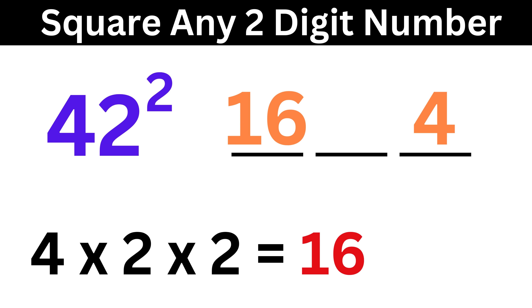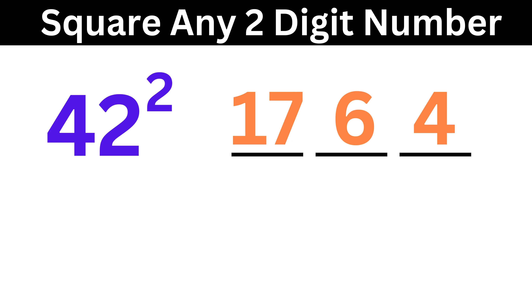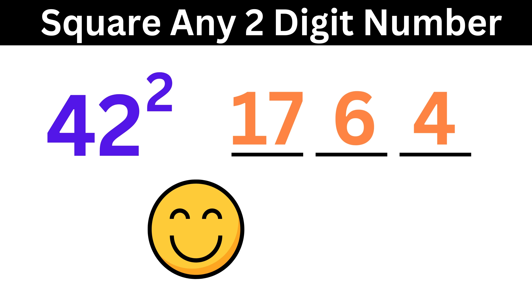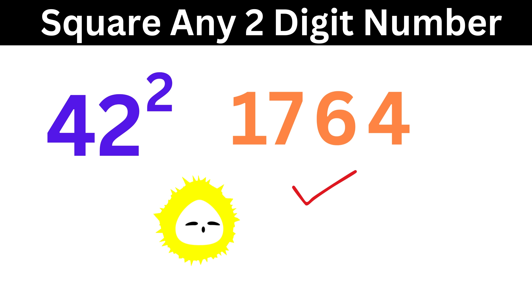We multiply the product with 2 to get 16. Since this is 2 digits, write 6 here and carry 1 here. Now add this 1 with 16 to make it 17, and we are done. The final answer is 1764. That was lightning fast, right?